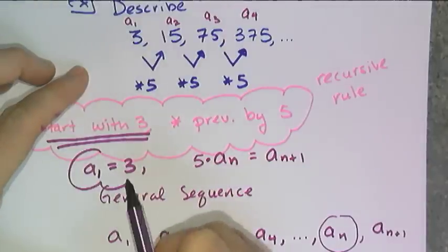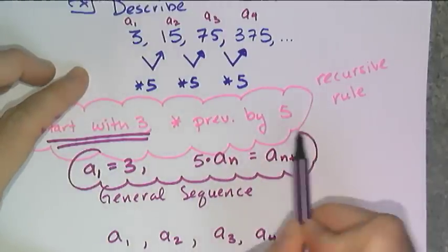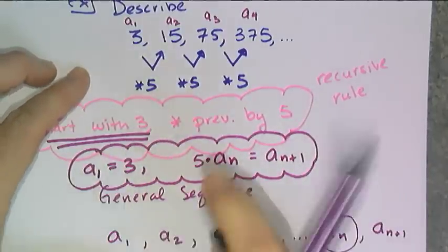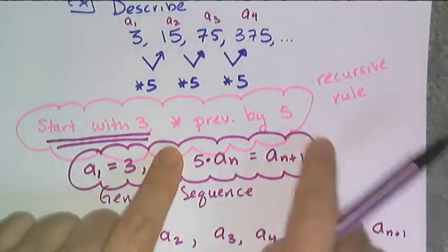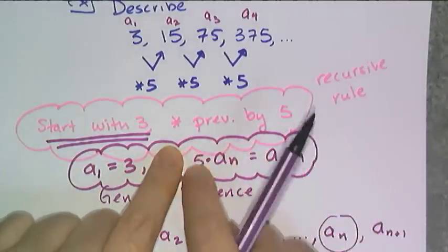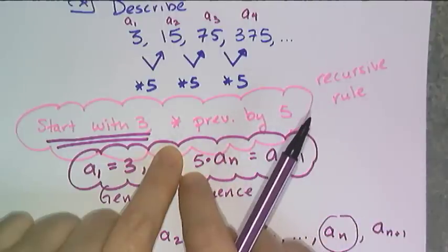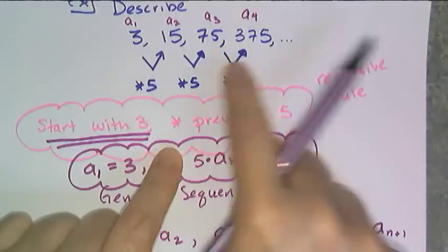So this, a sub 1 equals 3 for start with, 5 times a sub n equals a sub n plus 1 is the multiply previous by 5. This is the rule that will generate this sequence.